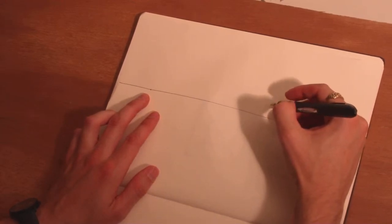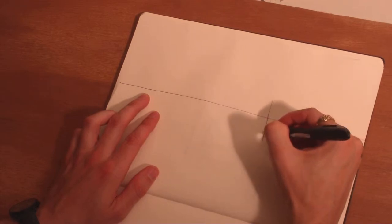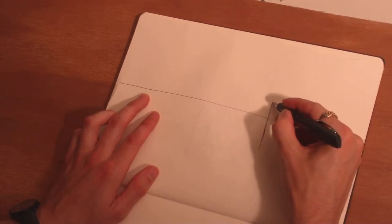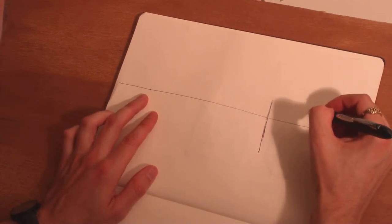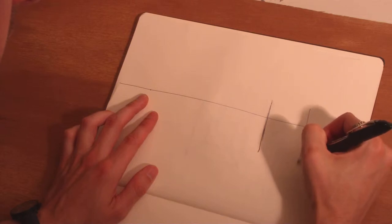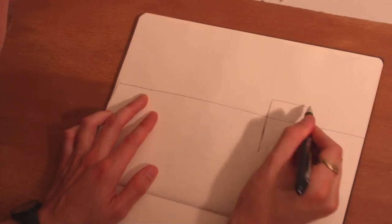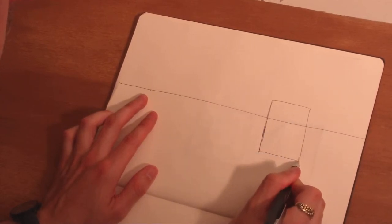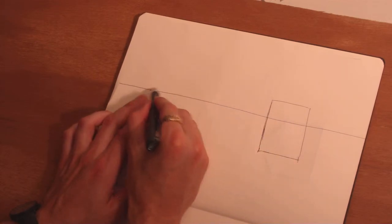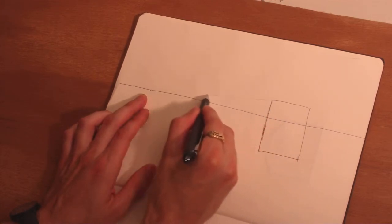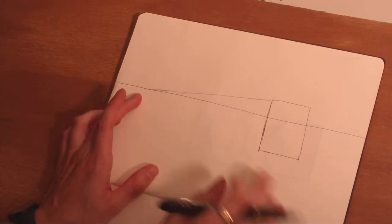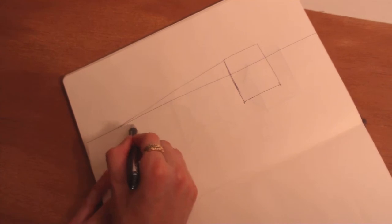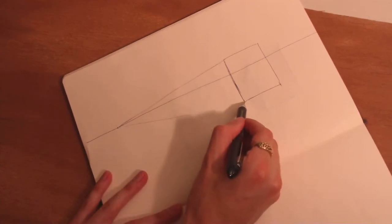So let's say we're drawing another rectangular solid. We're going to use the same approach—draw a rectangle and then draw our parallel lines to the horizon. Then we're going to draw our receding lines all the way over to the vanishing point. Tricky without a ruler, but don't worry about it.